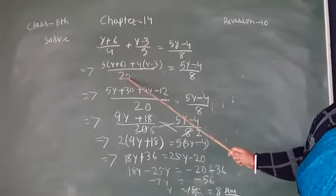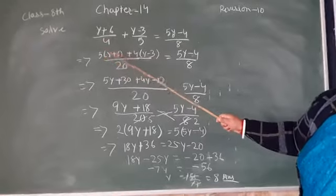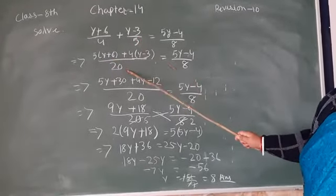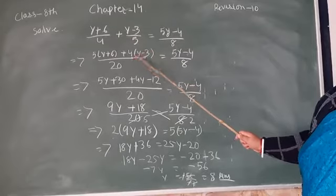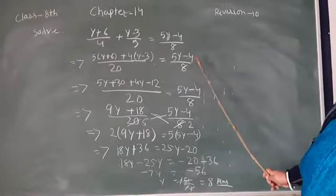Now you divide 20 by 4, you got 5. So 5 multiplied by y+6, plus 20 divided by 5, that's 4 times y-3, is equal to (5y-4)/8.